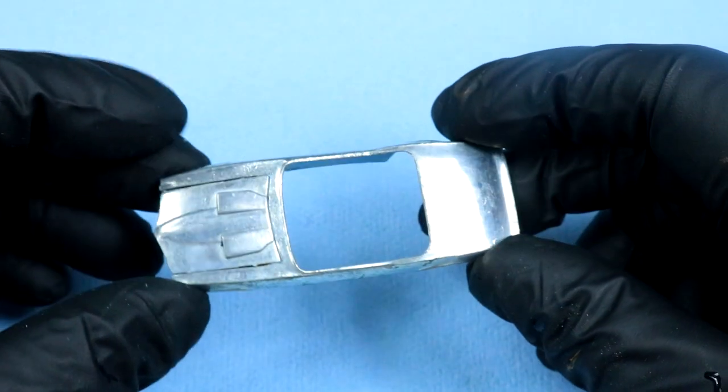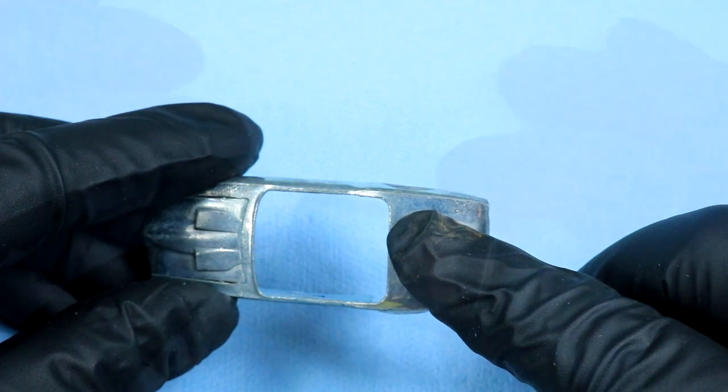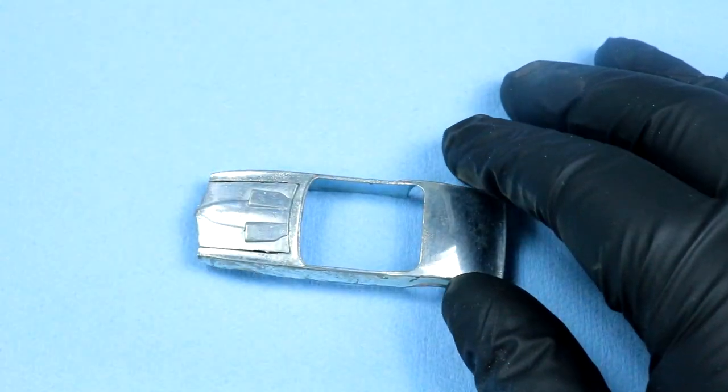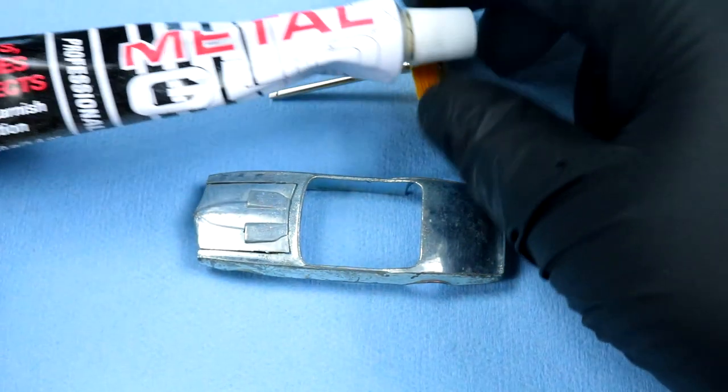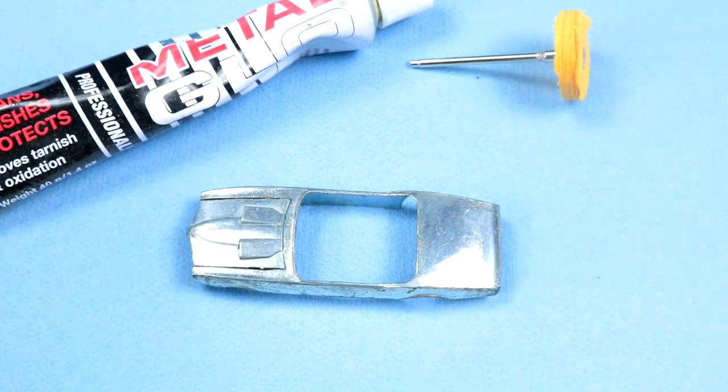As you can see this thing is in pretty good shape actually. So we're going to get polishing here. We're going to use one of these. And we're going to use some of my metal glow today I think, instead of the old Flitz.